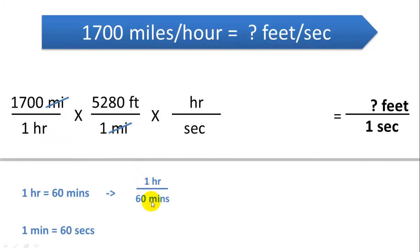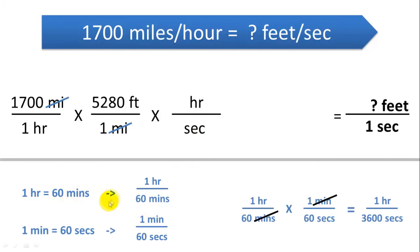One hour equals 60 minutes and one minute equals 60 seconds. We use one hour per 60 minutes, and one minute per 60 seconds — this way the minutes cancel and we end up with seconds on the bottom. Multiplying those two rates together: the minute units cancel, giving us one hour over 3,600 seconds. In other words, there are 3,600 seconds in one hour, expressed as one hour per 3,600 seconds.